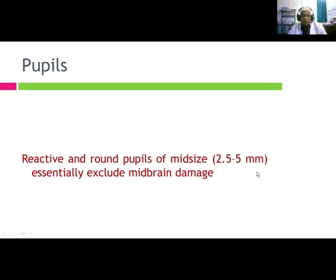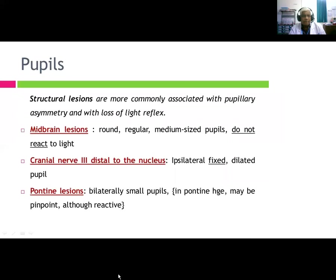Pupils that are reactive and round, mid-size at 2.5 to 5 millimeters, essentially exclude midbrain damage. Structural lesions are more commonly associated with pupillary asymmetry with loss of light reflex. Midbrain lesions produce round, regular, medium-size pupils of 2.5 to 5 mm that do not react to light.